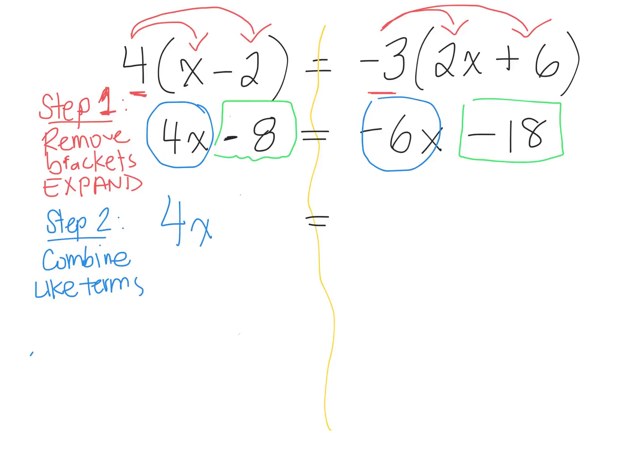But if I want to get rid of negative 6x, I want to get rid of it from the right side. I don't want it on the right side. I want it on the left side. What does it become? Positive 6x. So I've grouped my variable terms together. Are you with me? What do I have on the right side? Negative 18.